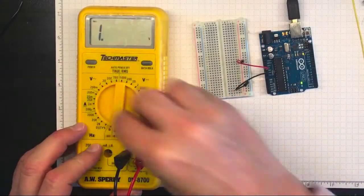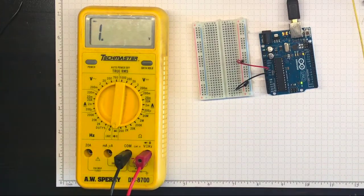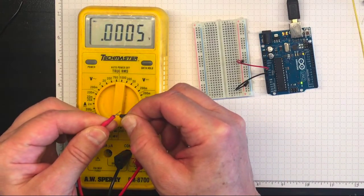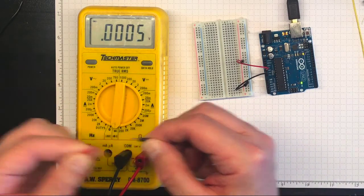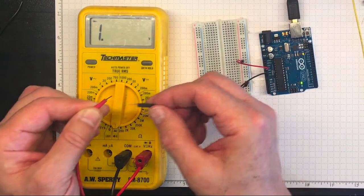Now I'm going to use the continuity tester to figure out if two wires are connected. If I touch the leads together it'll show a really low resistance. If I don't touch them it'll show a 1, meaning there's no continuity.